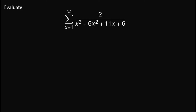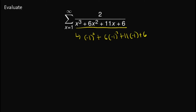We start by observing that this denominator can be factored out. First, observe that this has a factor of negative 1. Indeed, if we substitute negative 1, we have negative 1 cubed plus 6 times negative 1 squared plus 11 times negative 1 plus 6, which equals negative 1 plus 6 minus 11 plus 6. Adding this all up results to 0, so negative 1 is indeed a root of this polynomial.